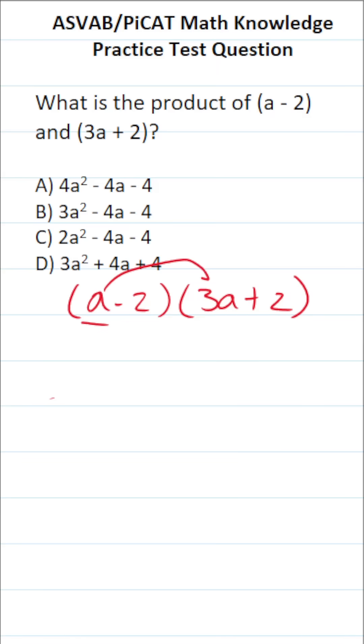You're going to take a, you're going to multiply it here and here. Then you're going to take negative 2 and multiply it here and here.